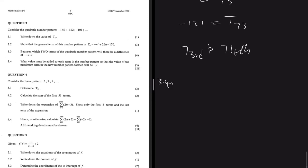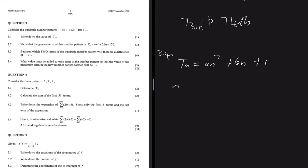Moving to question 3.4: what value must be added to each term so that the maximum term in the new pattern will be 1? Our general formula Tn equals an squared plus bn plus c is parabolic, so the maximum term occurs at n equals minus B divided by 2A, just as in a parabola. That gives minus 26 divided by 2 times minus 1, which equals 13. So the maximum term is T13.